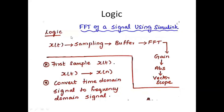If you see the logic here, we have to take a continuous signal — the continuous time signal x(t) — and apply sampling to it. The sampled signal will be stored in the buffer, and that signal we have to give to the FFT, the Fast Fourier Transform.